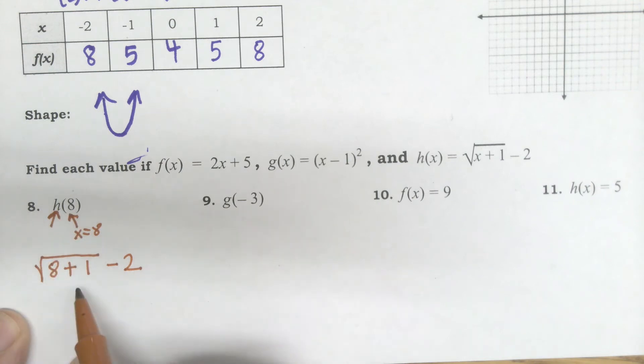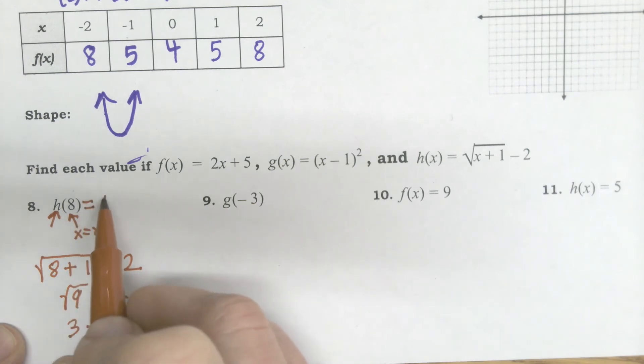Again, it's the H function with 8 plugged in. 8 plus 1 is square root of 9 minus 2. What's the square root of 9? No, that's 9 squared. Not 3. 3. If you're not sure, most of you have a square root key on your calculator that you can use. But square root of 9 is 3 minus 2. My final answer is 1. So H of 8 equals 1.